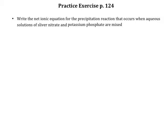This is a practice exercise from page 124 of the textbook, looking at how to write net ionic equations for precipitation reactions. In order to write a net ionic equation, it's easier to first write the full molecular equation, then do a complete ionic, and then move to the net ionic. You're actually going to have to do some steps between starting and getting to the net ionic.